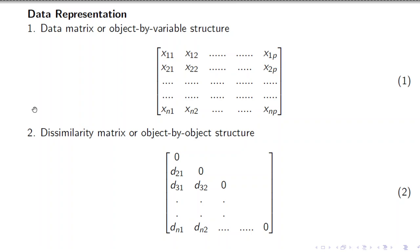When we represent data in clustering, data representation can be of two types: data matrix, which is an object-by-variable structure, and dissimilarity matrix, which is an object-by-object structure. In the data matrix, an object is represented as a p-dimensional vector where x1, x2, up to xp are the features of that object. So we have n objects and p features, and each data point is represented using a p-dimensional feature vector.